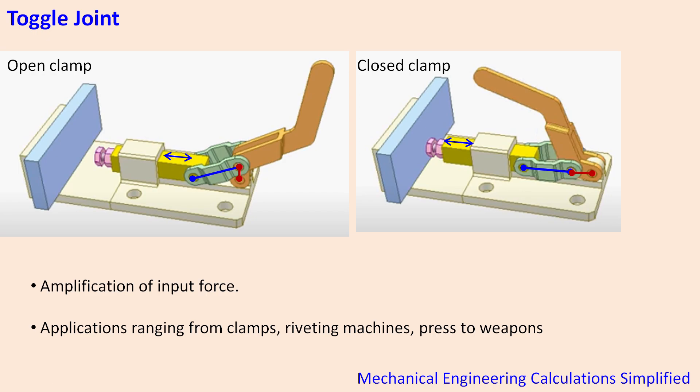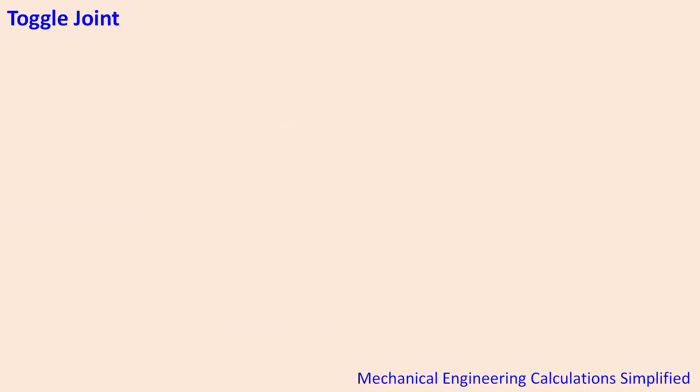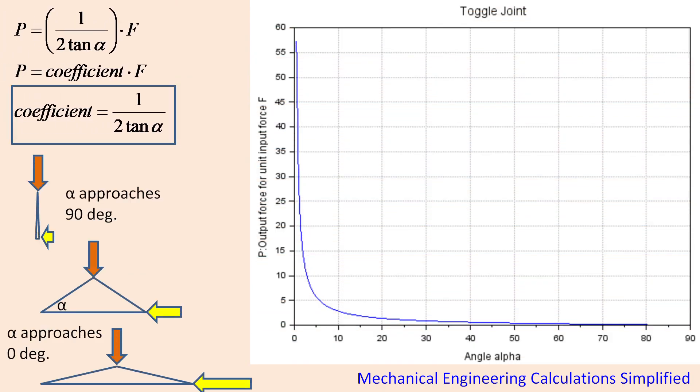Theoretically this amplification is infinite at alpha zero, but having constraints of the links being parallel to each other then they can flip on the other side, so you can't go exactly close to zero degrees but you go closer to zero degrees.